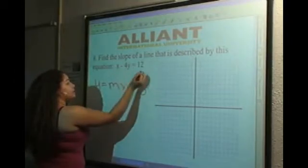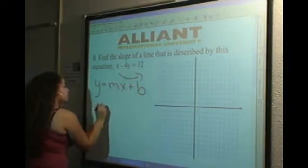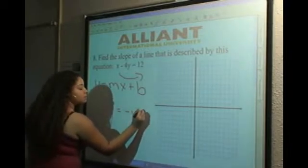Let's go ahead and bring the x over. So we'll be subtracting this. You're left with negative 4y is equal to negative x plus 12.